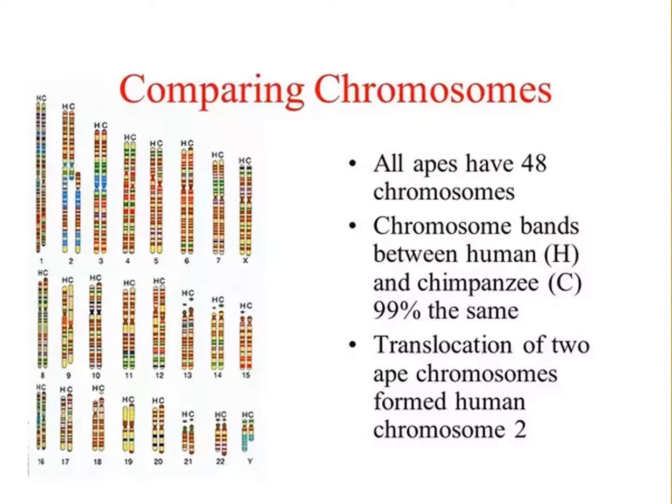Chromosome fusions happen to be fairly common, even within the same species. In fact, there are humans alive today that have chromosome fusions of various different chromosomes, and surprise, surprise, they're still human — morphologically and functionally indistinguishable from other modern humans.